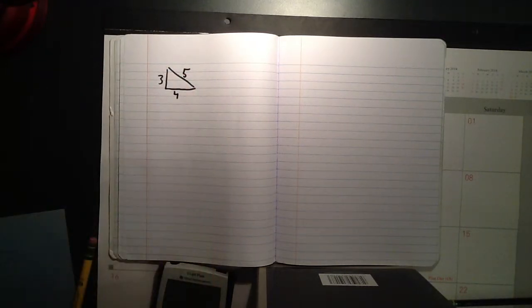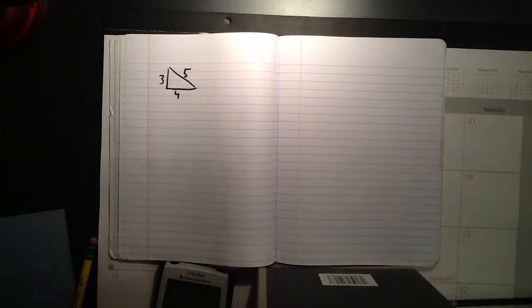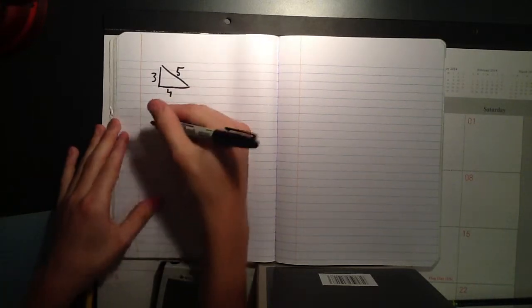I could do three times four is twelve, divide that by two and get six. But, for all intents and purposes, we're just going to say we don't know how to use that method. So, we'll start over again.